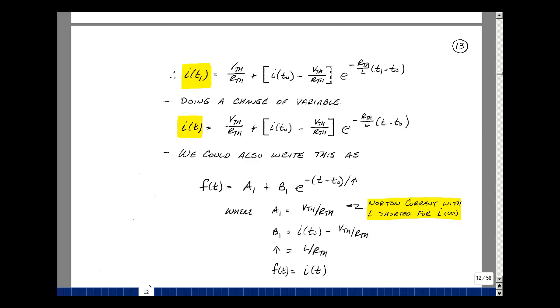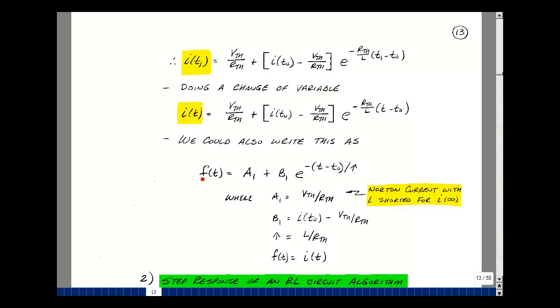I could write this symbolically as F(t), where F(t) is I(t). This first term we'll call it A1. The second term times the exponential we'll call B1. And then we have an exponential here. And then previously we were using T minus T0 divided by tau. So let's write this term here as a reciprocal as L over R_Thevenin. A1 turns out to be V_Thevenin over R_Thevenin, and then B1 is the difference of the initial condition and V_Thevenin over R_Thevenin.